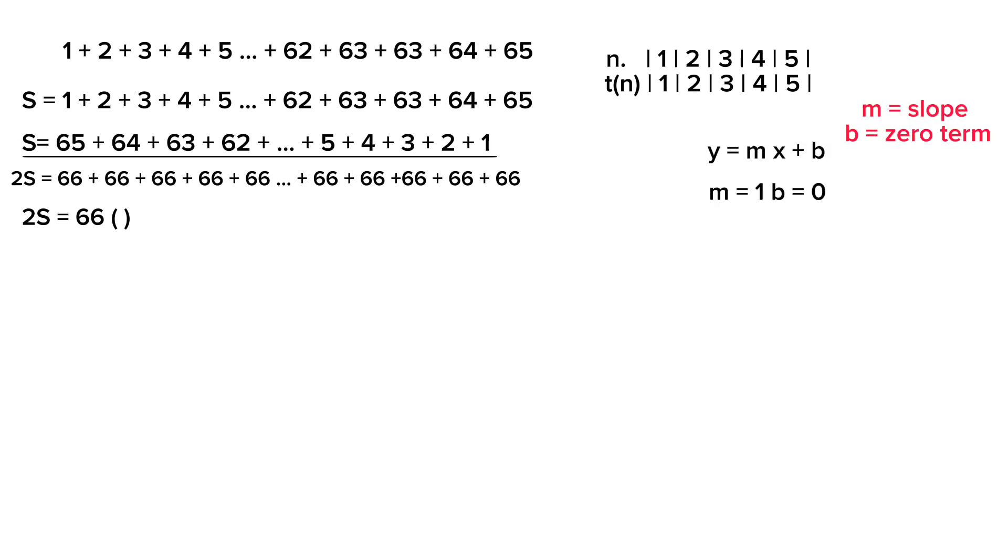So we're gonna change the equation we have here. So our y was actually t(n), which is the term, and is equal to our slope here, which is 1.